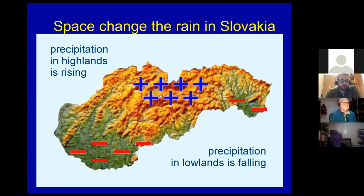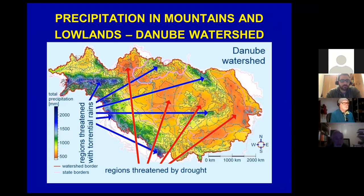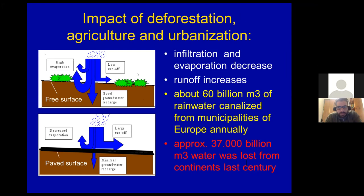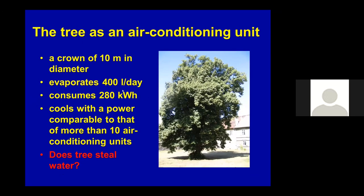Here are the High Tatras at 2500 meters and the lowland at about 100 to 200 meters. We observe a shift of rain from the lowlands to the High Tatras. We think it is because the lowlands are getting warmer and warmer — water evaporates but is still caught and condensates at the High Tatras. So we have places that are really dry and places that get torrential rain causing local damage.